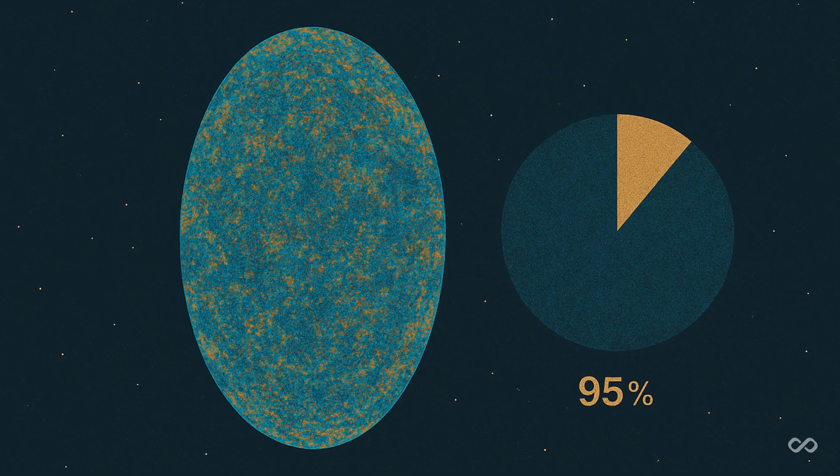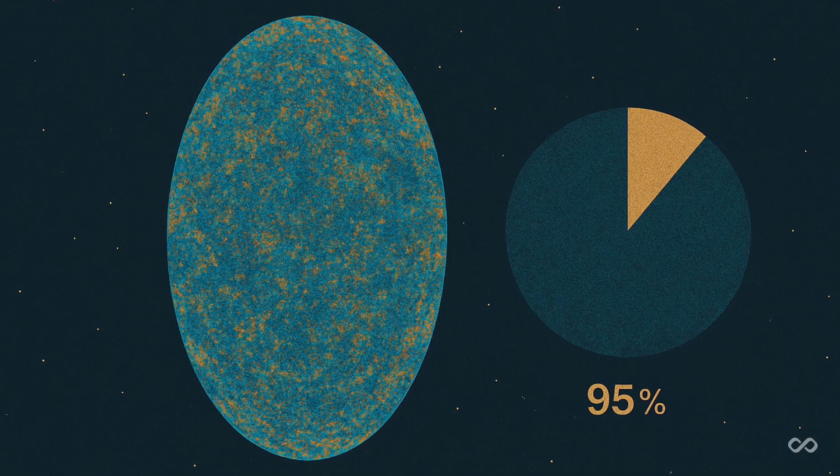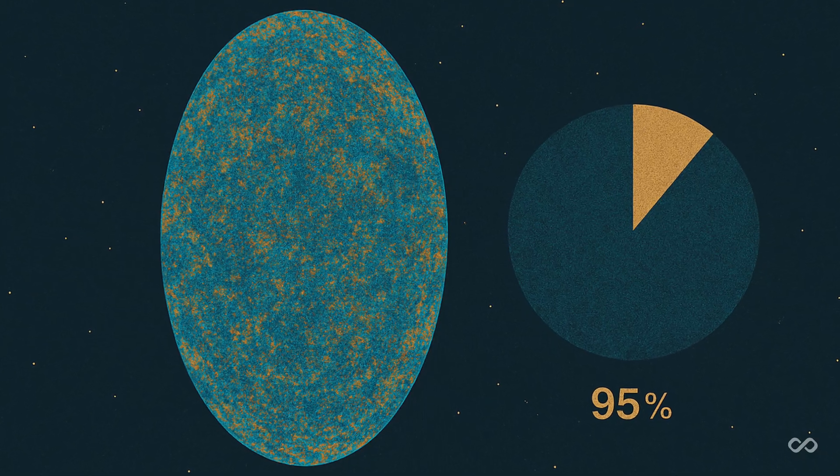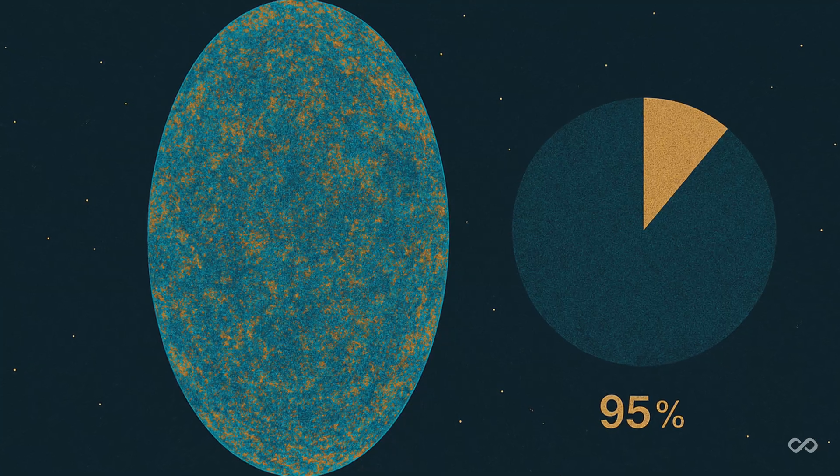By analyzing this pattern, scientists can actually estimate how much of the universe is made of regular matter and how much is something else. And spoiler alert, most of it is something else.